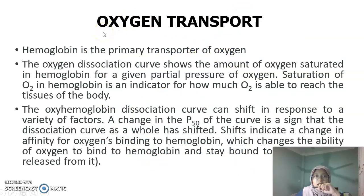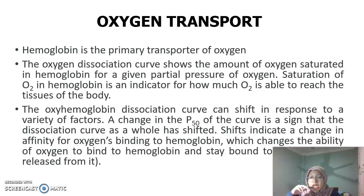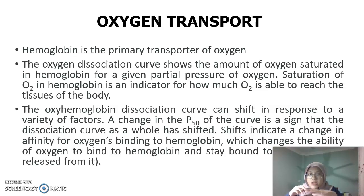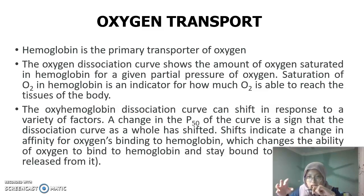For oxygen transport, hemoglobin is the primary transporter of oxygen. There is a dissociation curve that shows the amount of oxygen saturated in hemoglobin for a given partial pressure of oxygen. The saturation of oxygen in hemoglobin indicates how much oxygen is able to reach the body's tissues. The oxygen-hemoglobin dissociation curve can shift in response to many factors; any change in partial pressure and the P50 of the curve signals that the curve has shifted, indicating a change in the affinity of oxygen binding to hemoglobin.